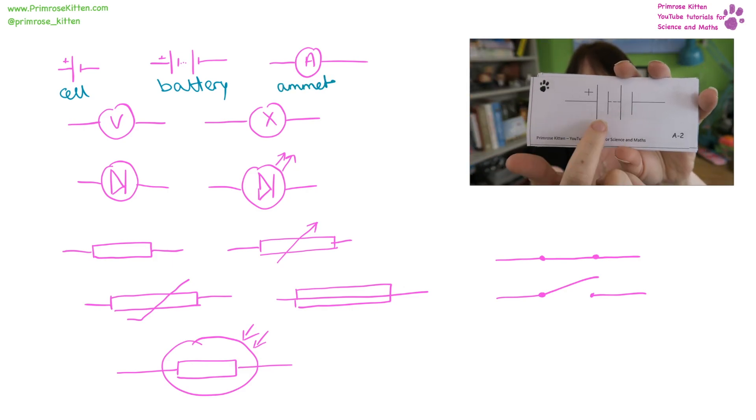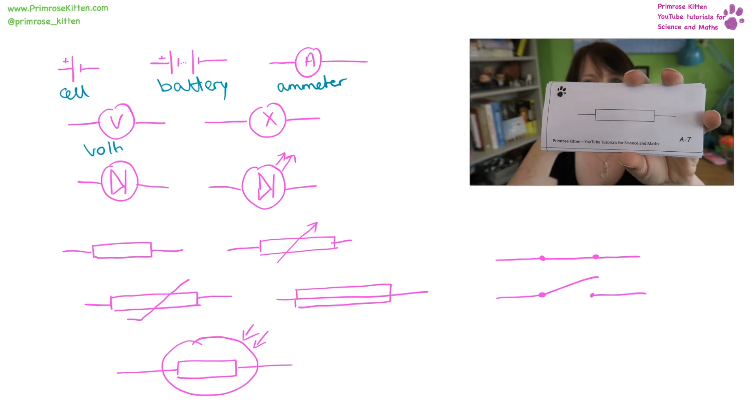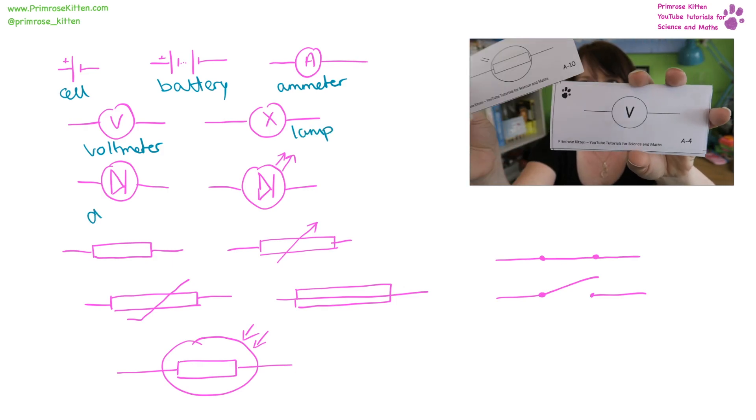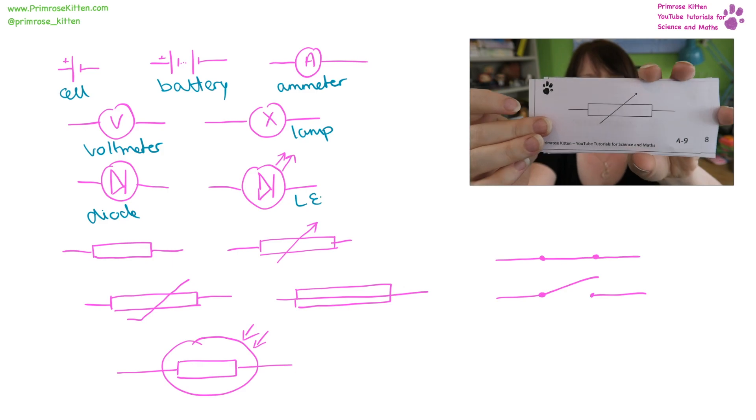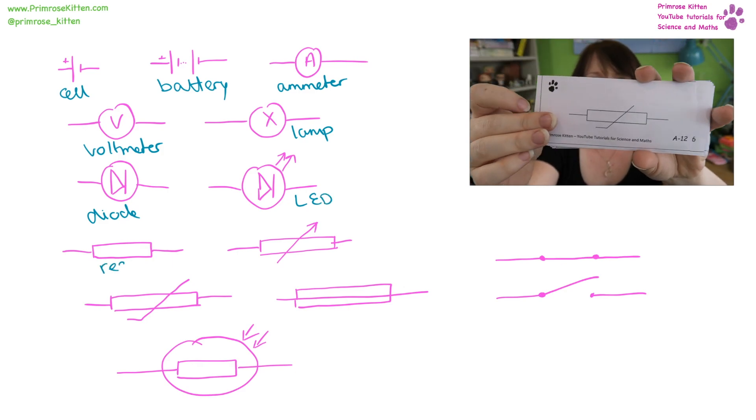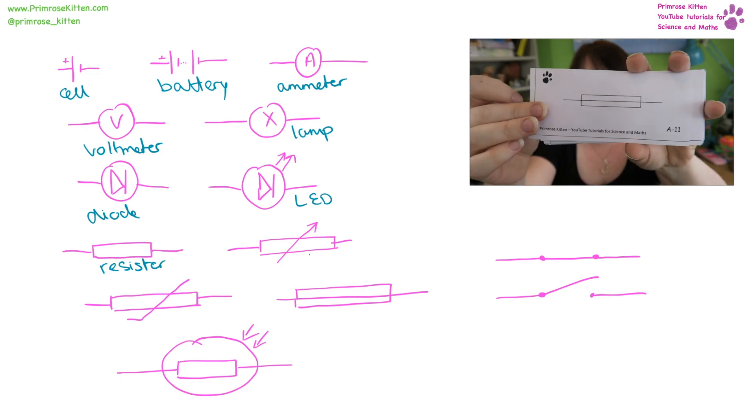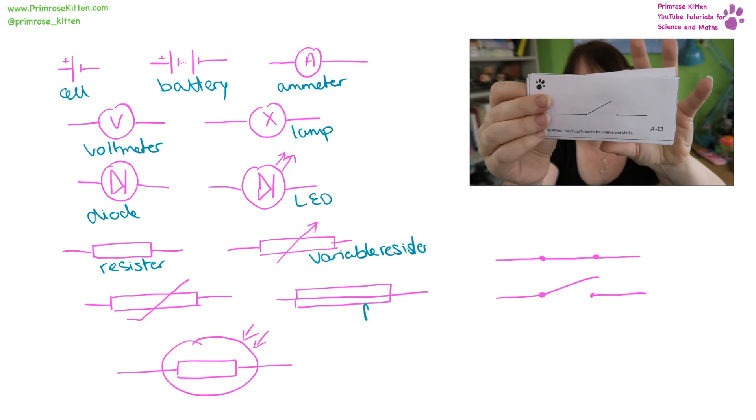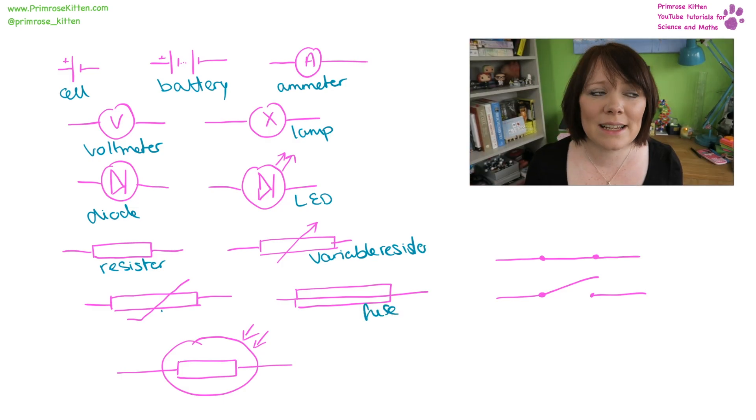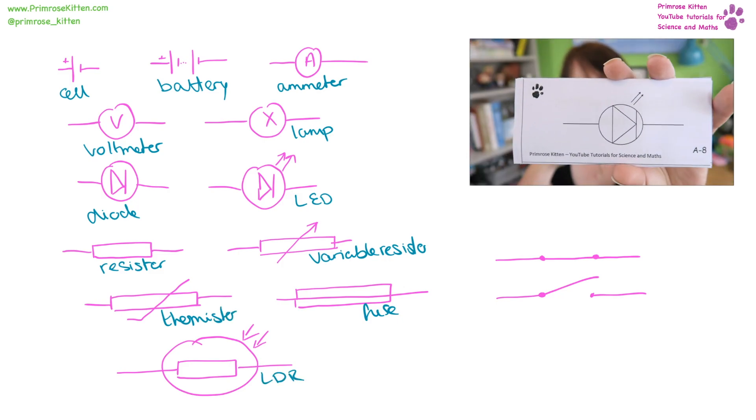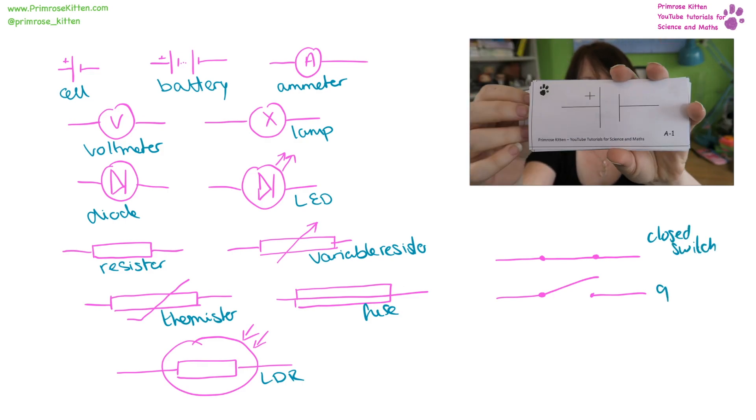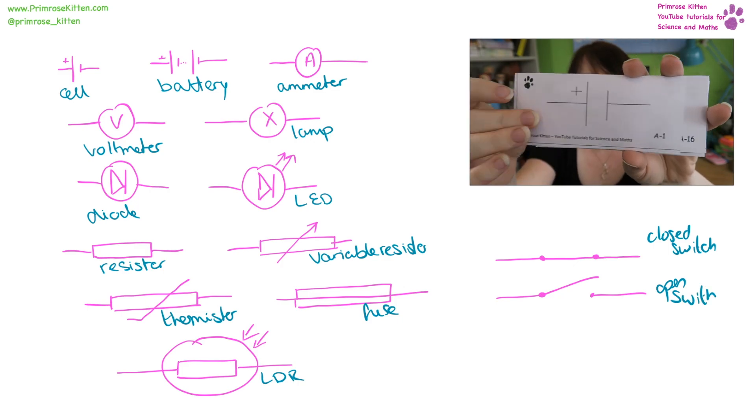Here we have an ammeter, voltmeter, a lamp or a bulb, diode, an LED light emitting diode, resistor, variable resistor, fuse, thermistor, LDR light dependent resistor, close switch, open switch.